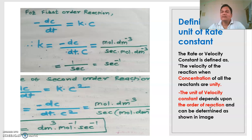The order of reaction can be zero order, first order, second order, or third order. The unit of the rate constant depends upon the order of reaction. So the unit is calculated based on whichever order of reaction is given.